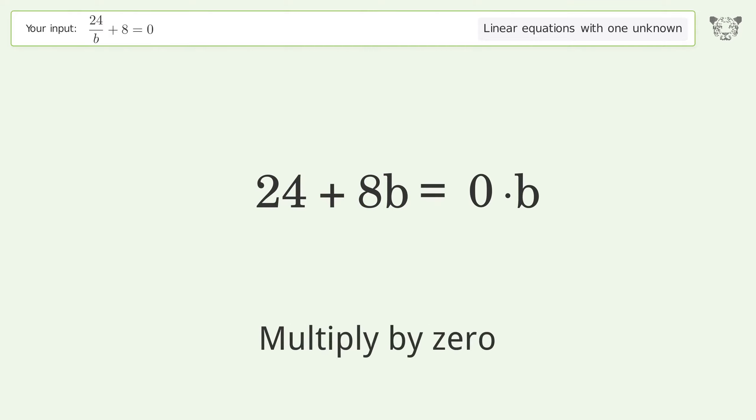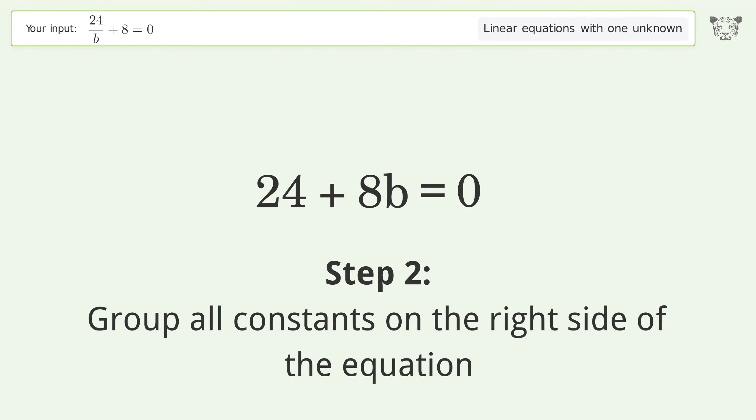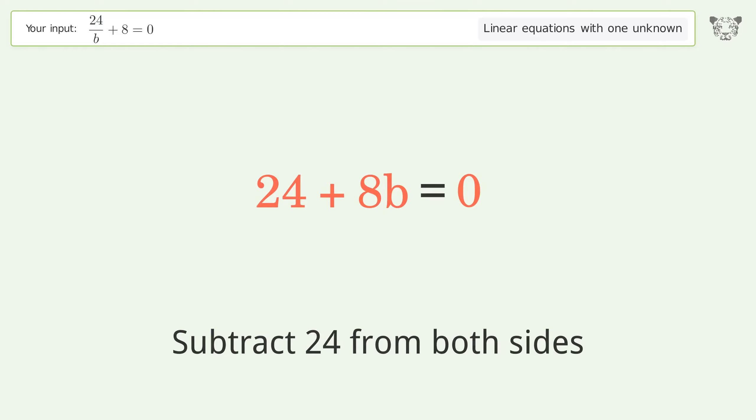Multiply by zero. Group all constants on the right side of the equation. Subtract 24 from both sides.